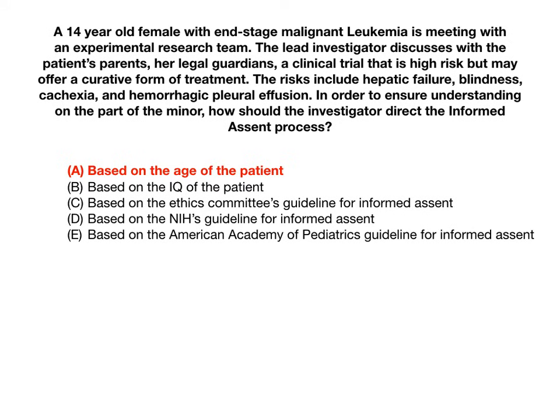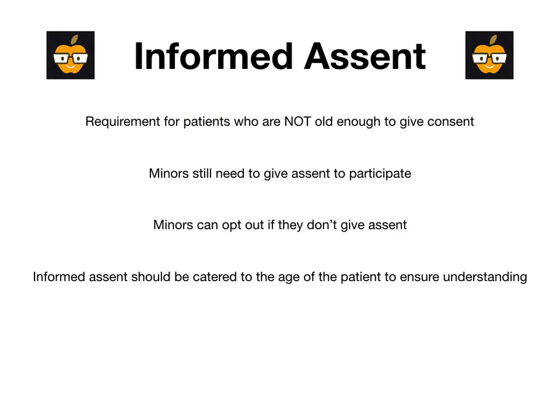You always direct informed assent toward the age of the patient — very high yield. Here's the complete high-yield bottom line: Informed assent is a requirement for patients not old enough to give informed consent, typically non-emancipated minors. These minors still need to give informed assent to participate in anything perceived as high risk. Minors can opt out even if the legal guardian gives informed consent. And informed assent should be catered to the age of the patient to ensure their understanding. That's everything you should understand about informed assent.